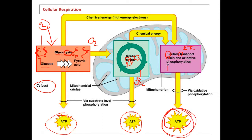The electron transport chain needs iron (Fe) and CoQ10 — coenzyme Q10. This is why iron deficiency anemia, or a woman losing blood during her menses, can cause low energy — you're losing iron. If you're deficient in CoQ10, which happens to many people on statin drugs or cholesterol medication, that will also impair the mitochondria from producing proper ATP. So you need B vitamins for the Krebs cycle and you need iron and CoQ10 for the electron transport chain.